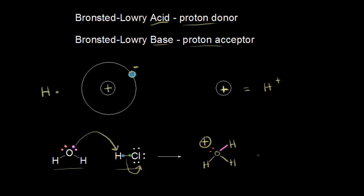The other product is chlorine, which already had three lone pairs of electrons. It picks up both electrons: the green one it originally contributed to the bond and the blue one it took from hydrogen. Chlorine now has a negative charge—it's the chloride anion, Cl⁻.